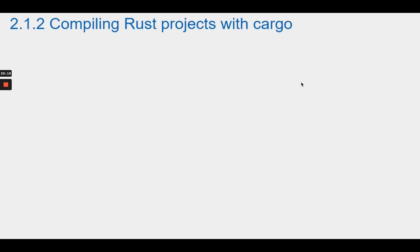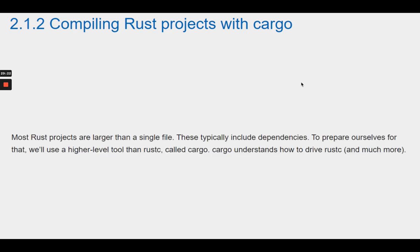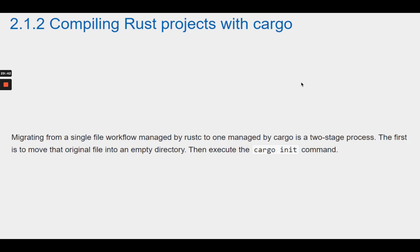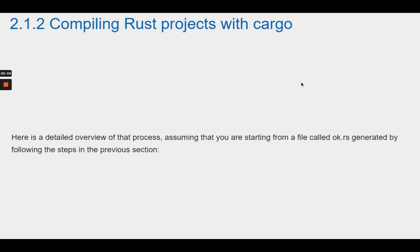Section 2.1.2 Compiling Rust projects with Cargo. Most Rust projects are larger than a single file and typically include dependencies. To prepare ourselves for that, we'll use a higher level tool than Rustc called Cargo. Cargo understands how to drive Rustc and much more. Migrating from a single file workflow managed by Rustc to one managed by Cargo is a two-stage process. The first is to move the original file into an empty directory. Then execute the cargo init command.